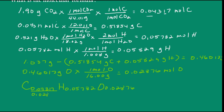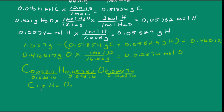We have a problem — carbon gives us 1.5. We need to multiply by a number that will give us a whole number. If we multiply by 2, we end up with 3 carbons. We have to multiply hydrogen by 2 and oxygen by 2 as well. So our empirical formula is C3H4O2.